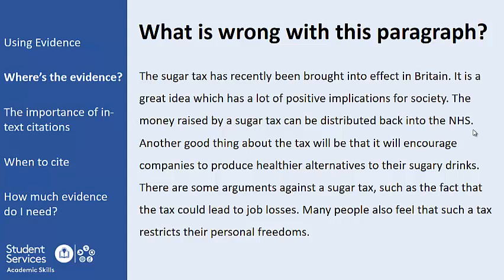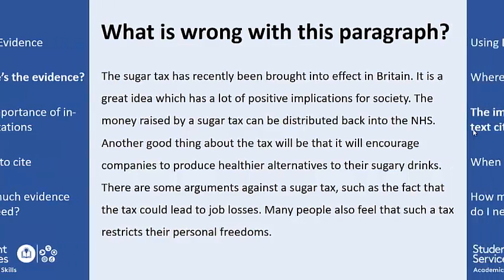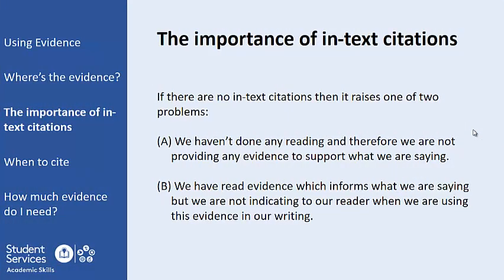Remember that our in-text citations are how we indicate to our reader that evidence is being included within our writing. Therefore, if we have a large amount of writing in our assignment with no in-text citations, then our marker will already be alert to one of the following two problems. Problem A: we haven't done any reading on the topic and therefore all the information contained in our writing is simply our own thoughts or ideas. This means that our writing is not evidence-based and is therefore unlikely to achieve the standards expected of us.